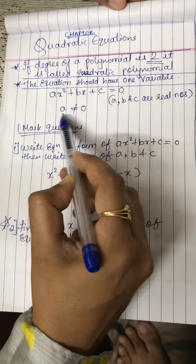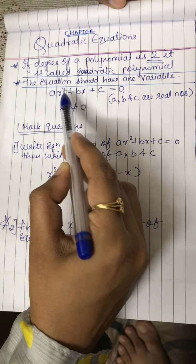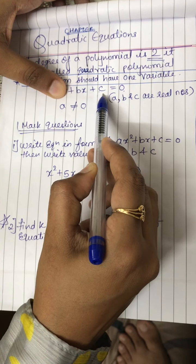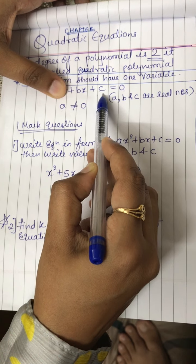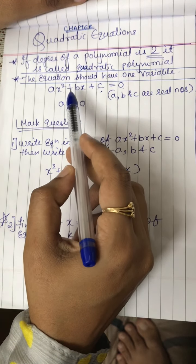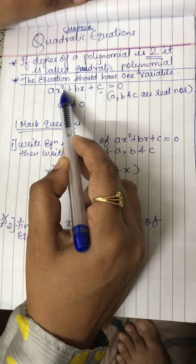But a should not be equal to 0. Why? If a will be equal to 0, then your equation will be linear polynomial which is not a quadratic equation. So accordingly, to get quadratic equation, the highest degree should be 2.